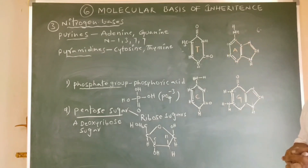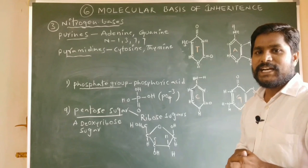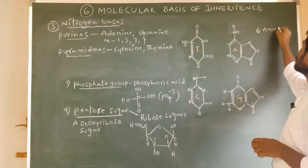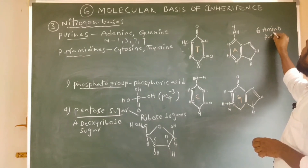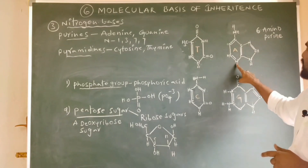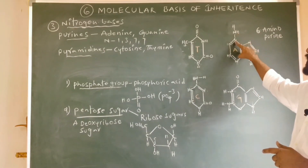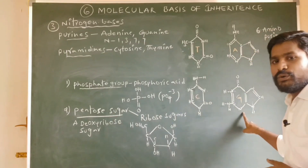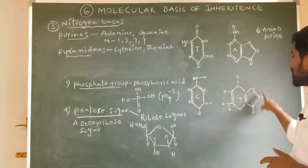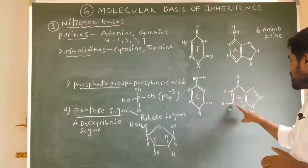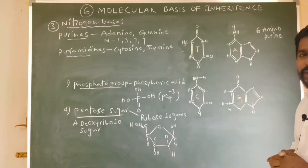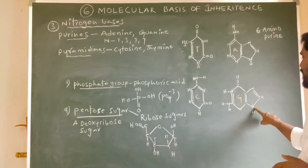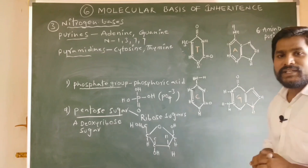This is the purine adenine. According to IUPAC, the scientific name of adenine is 6-aminopurine. Here you can find an amino group at the sixth position, hence the name 6-aminopurine. Guanine is also a heterocyclic double-ring structure having a six-membered ring fused with an imidazole group, showing nitrogen at the first, third, seventh, and ninth positions.